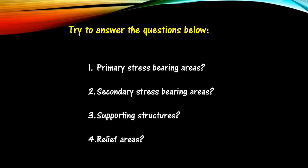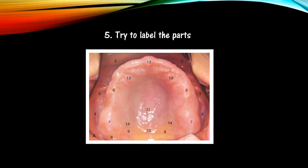That's all about the anatomic landmarks of the maxilla. Now try to answer the questions: primary stress-bearing areas, secondary stress-bearing areas, supporting structures, and relief areas. Also try to label the parts of the anatomic landmarks intraorally. Please put your answers in the comment section below. Thanks for watching. Subscribe for more videos. If you like the video, please like and share it with your friends. Thank you.